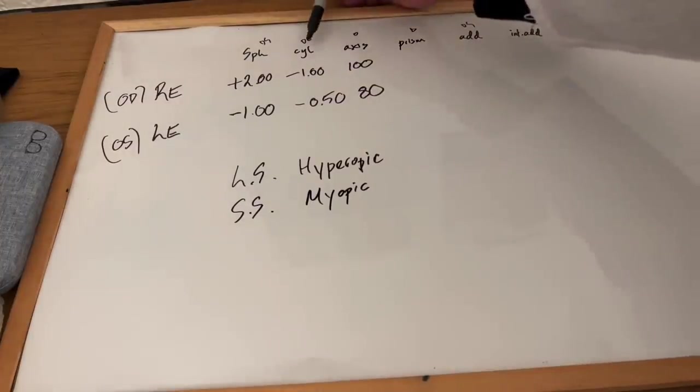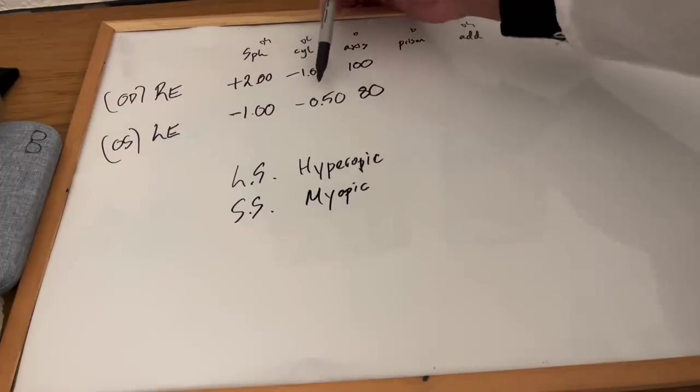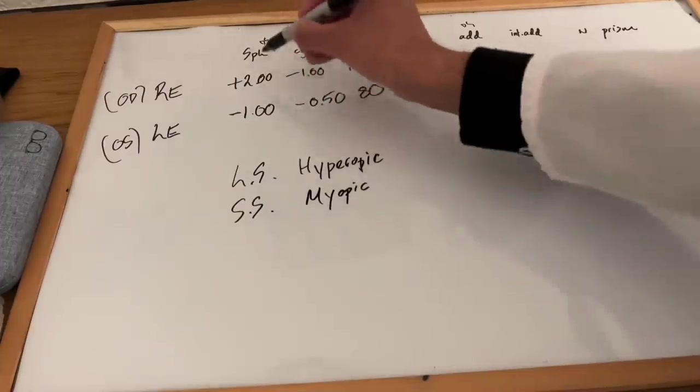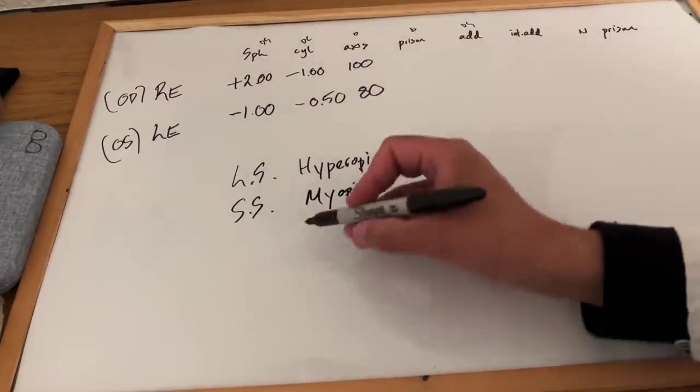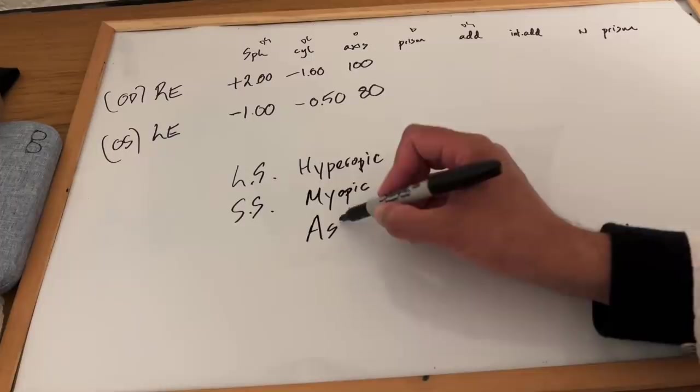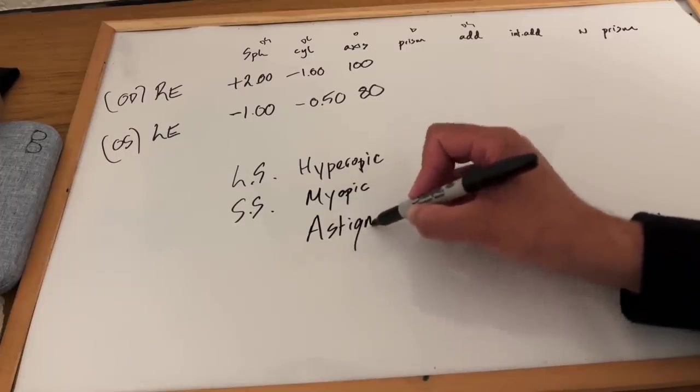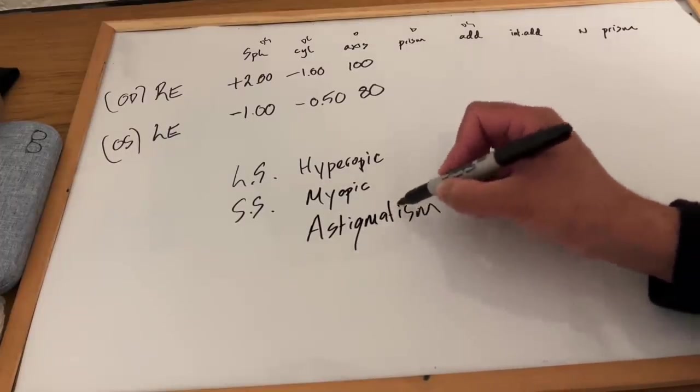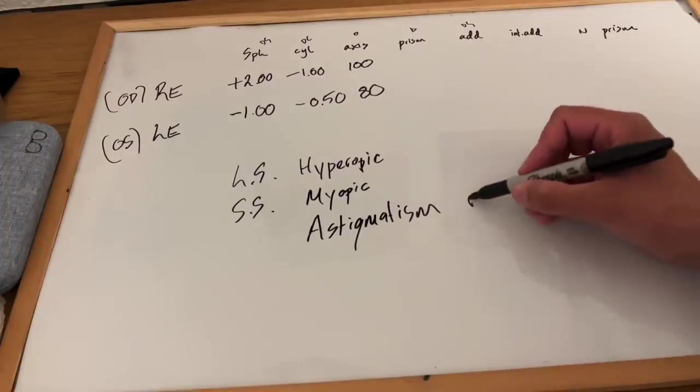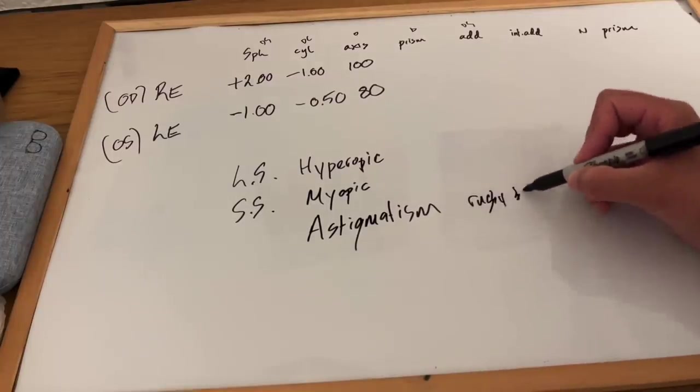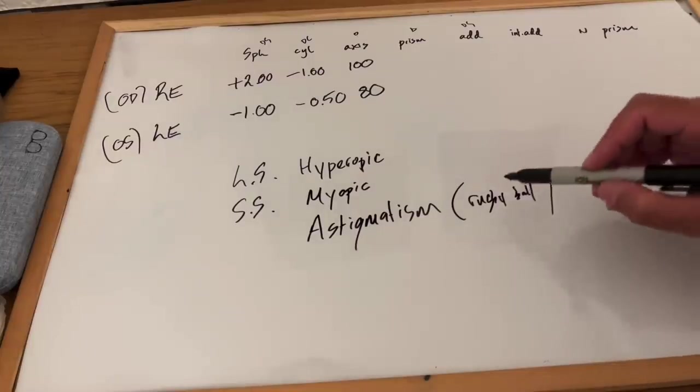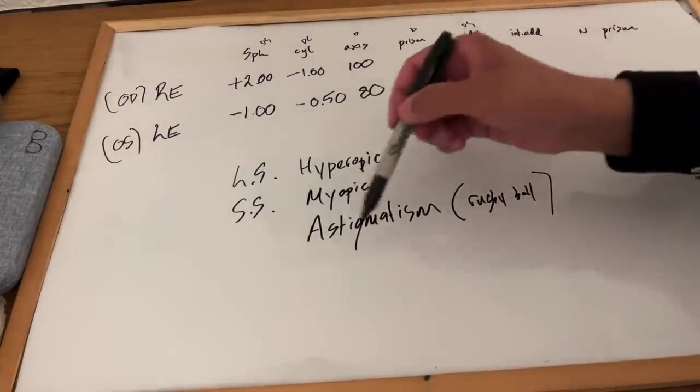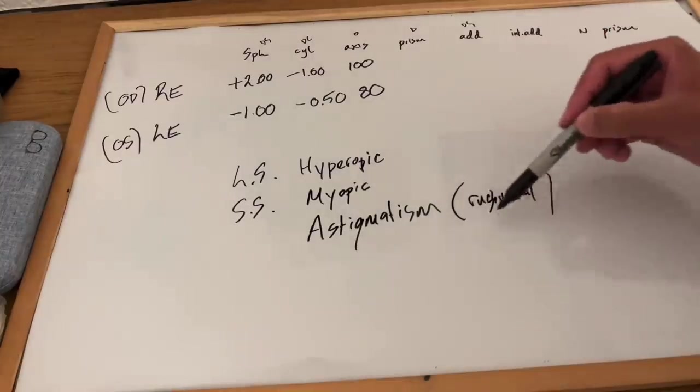And if there are any numbers present in the cylindrical column there, that means you have some astigmatism as well as long or short-sighted. If there's numerical values there, you have astigmatism, you have rugby ball shaped eyes, which is a term commonly used by optometric professionals to describe astigmatism.